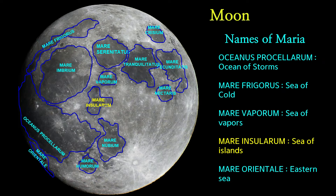Mare Insularum is a lunar mare located in the Insularum basin, just south of the western Mare Imbrium. The basin material is of the lower Imbrium epoch, with the mare material of the upper Imbrium epoch. Mare Insularum means the Sea of Islands. Mare Orientale is a lunar mare located on the western border of the near side and far side of the Moon, difficult to see from an Earth-bound perspective. Images from spacecraft have revealed it to be one of the most striking large-scale lunar features, resembling a target or bullseye. Orientale means Eastern Sea.